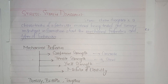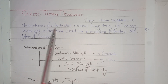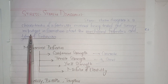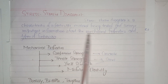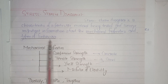In this video, we are going to talk about the topic stress-strain diagram, limiting our discussion to traditional materials, that is steel and concrete. This diagram is a characteristic of a particular material being tested and conveys important information about the mechanical properties and types of behavior.